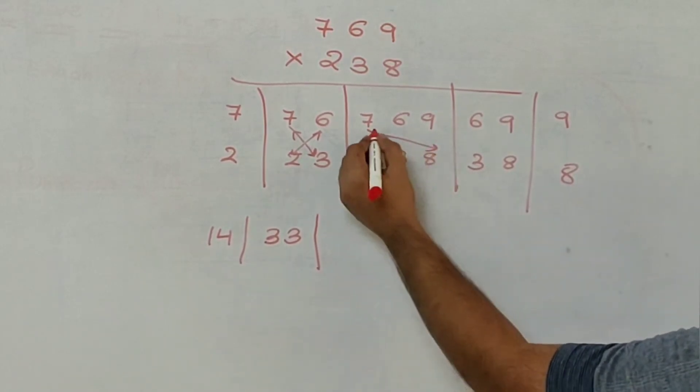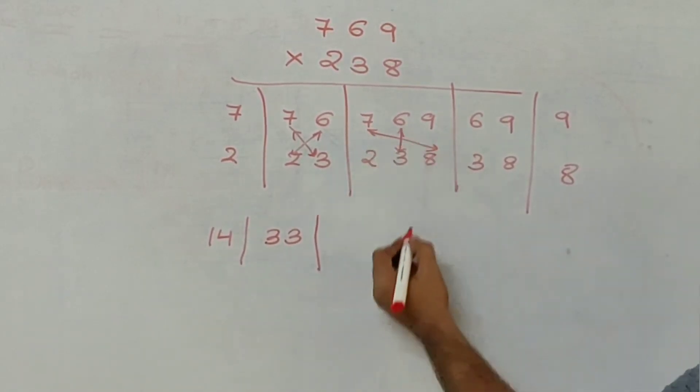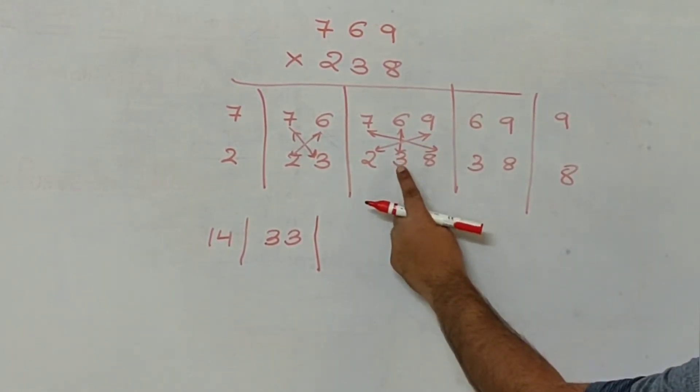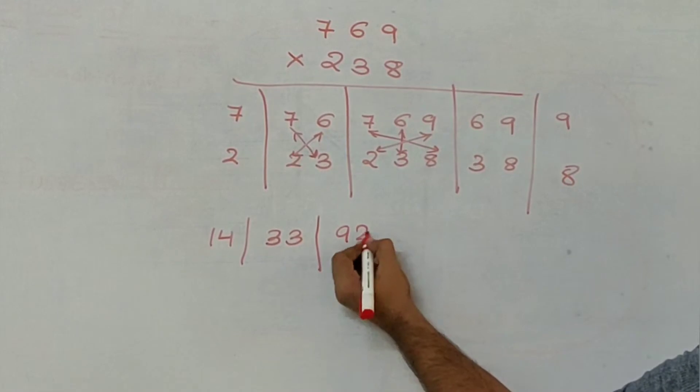Next is 7, 8 is 56, 6, 3 is 18, 9, 2 is 18. So 56 plus 18 is 74, plus 18 is 92.